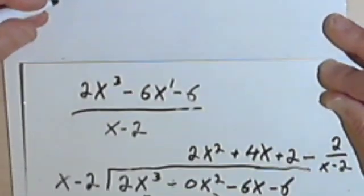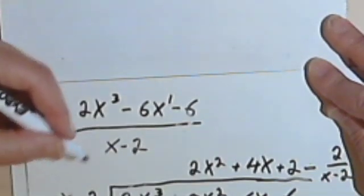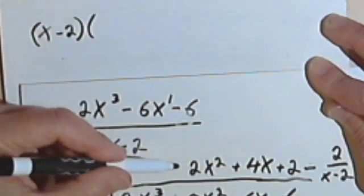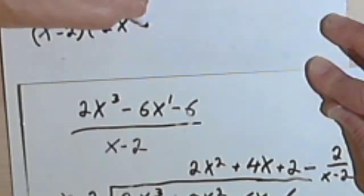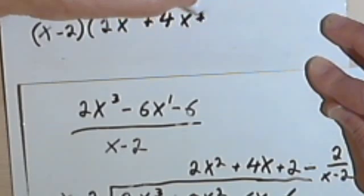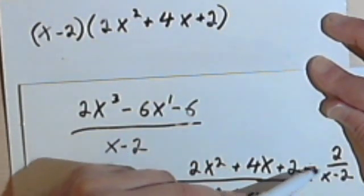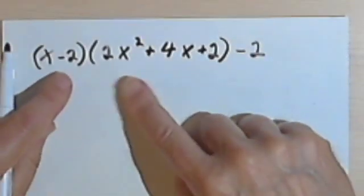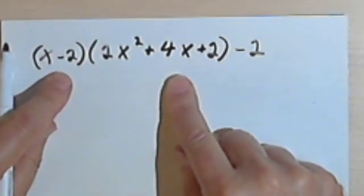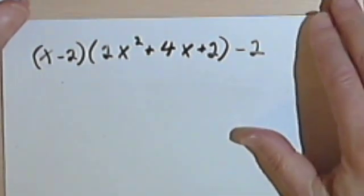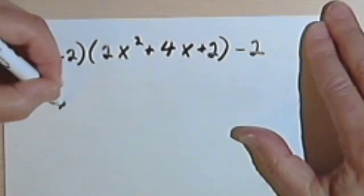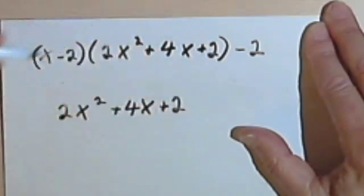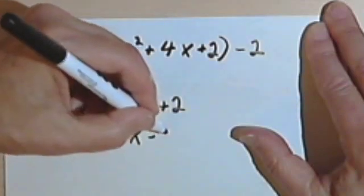I want to multiply x minus 2 times the answer that I got, 2x squared plus 4x plus 2. And then I want to include my remainder, so I'm going to have a negative 2. Okay, so here's how we do this. We're going to set this up, the multiplication problem, we're going to set that up just like a regular long multiplication. So here's what I mean. We're going to have 2x squared plus 4x plus 2 and we're multiplying that by x minus 2.